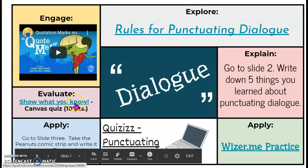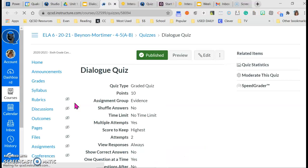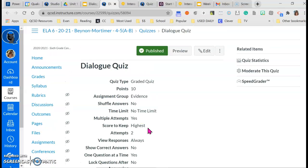Then you're going to evaluate what you know by showing what you can do on this Canvas quiz. It is 10 points of evidence and you may try it twice with the highest score as your final score.